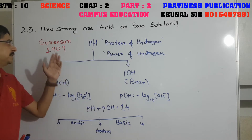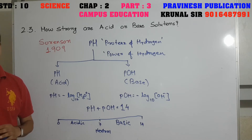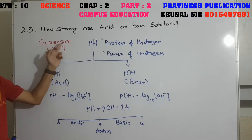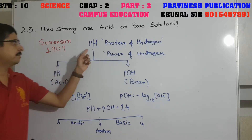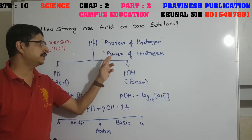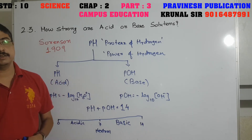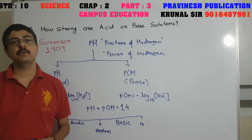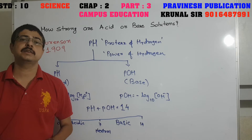But how much acidic or how much basic a solution is — its acidic or basic value — we cannot determine with universal indicator, litmus paper, phenolphthalein, or methyl orange. With the help of the pH scale, we can say how strong an acid or base is. This scale was given by Sorensen in 1909. The full form of pH is 'Potenz of Hydrogen' or 'Power of Hydrogen.'